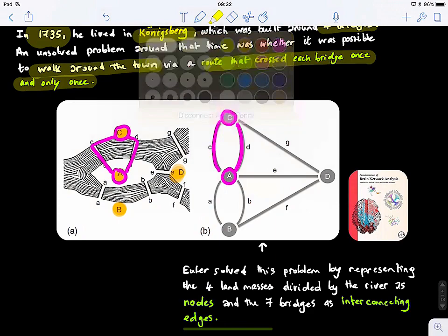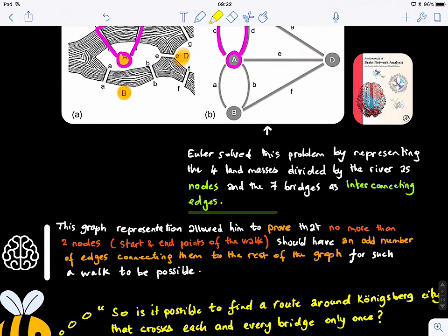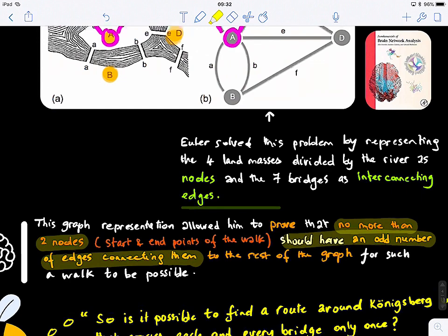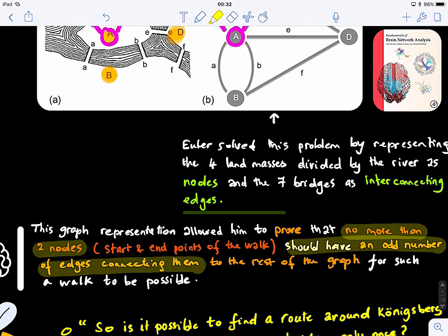After looking into that, he showed that in this graph representation, it allowed him to prove that no more than two nodes should have an odd number of edges connecting them to the rest of the graph, for such a walk to be possible. It means that if you have more than two nodes with an odd number of edges connecting them to the rest of the nodes, then this walk will not be possible.